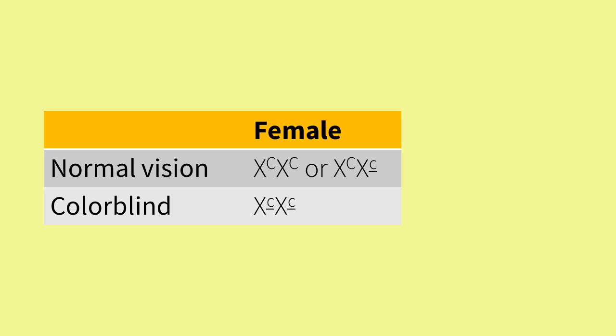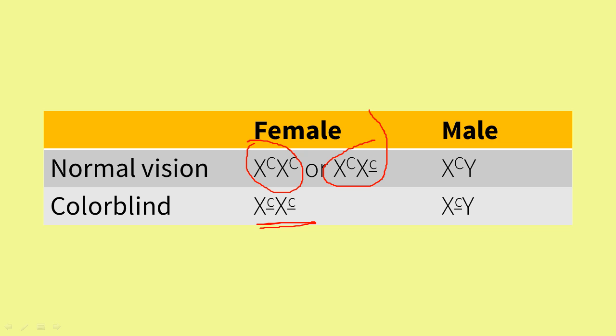So a normal vision female can be homozygous with two capital C's, or she may carry a recessive allele. To be colorblind, a female must have two recessive alleles, shown here as two small c's. A male, however, will either have a normal vision allele or a colorblind allele on his X chromosome. There will be no allele on the Y chromosome. So for males, once we know their phenotype, we know their genotype.